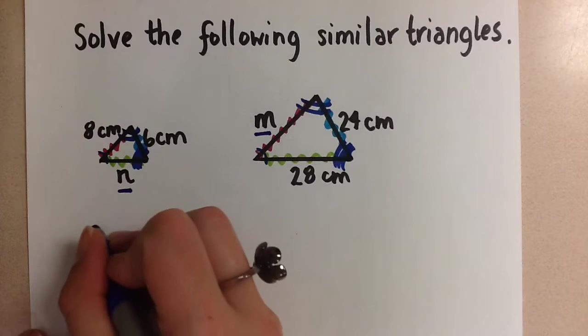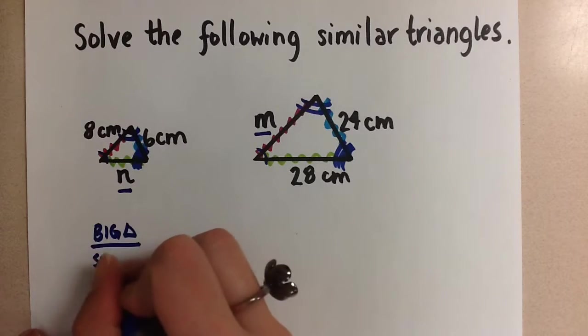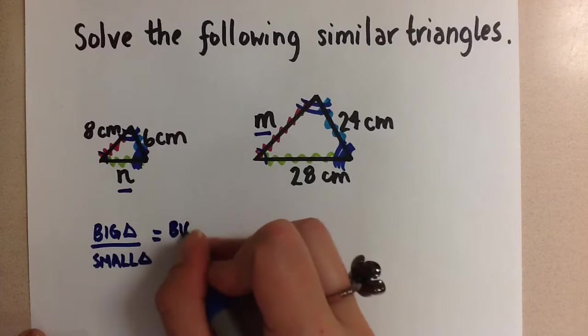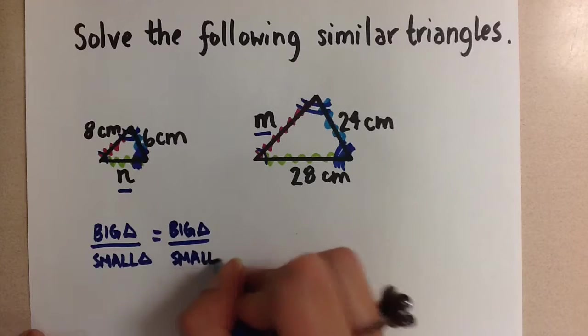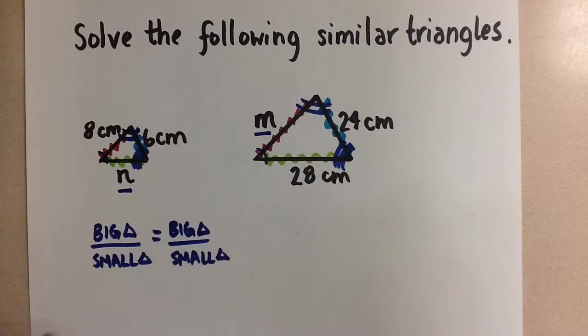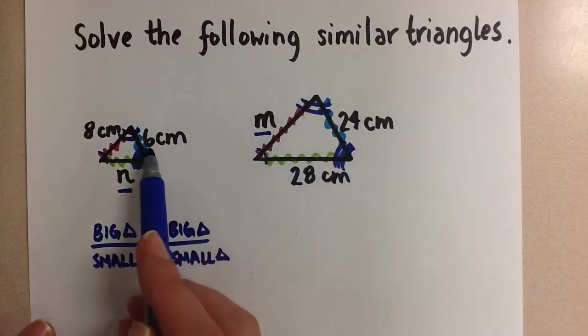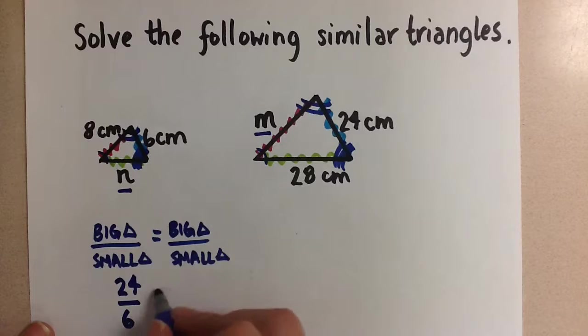So the convention we've been using in class is to set up our proportion with big triangle over small triangle equals big triangle over small triangle. So now let's sub in the sides that are corresponding. Here, this 24 corresponds with this 6. So we're going to set up our proportion 24 over 6 equals,